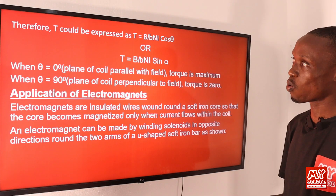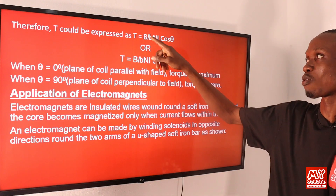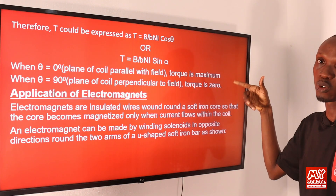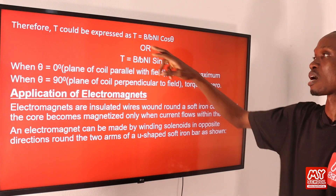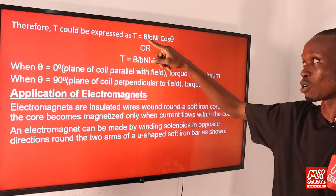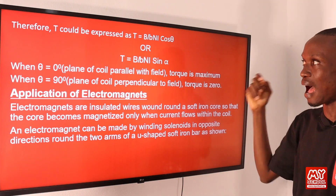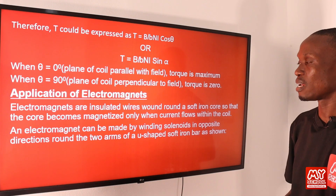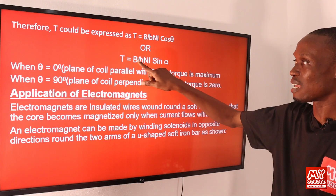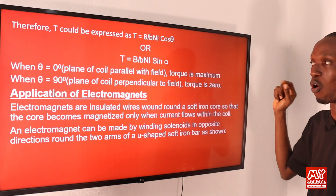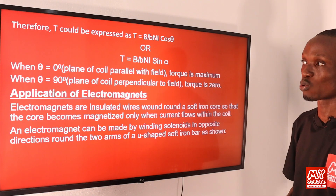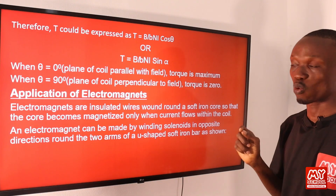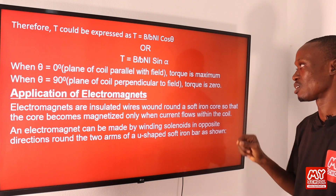For a rectangular coil, replacing A with Lb (length times breadth), the torque becomes T = BNbLI cosθ, or equivalently T = BNbLI sinα, where Nb represents the area of the rectangular coil. When θ is close to 0° (plane of coil parallel to the field), torque is maximum. When θ is close to 90° (plane of coil perpendicular to the field), torque is zero.